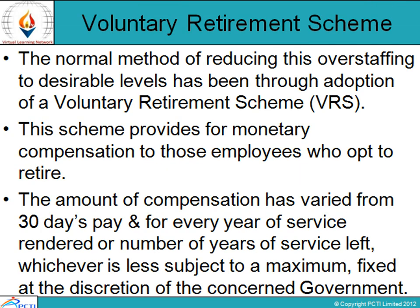When we talk about Voluntary Retirement Scheme (VRS): most public enterprises have always been overmanned. A World Bank study of five countries — Chile, Egypt, Ghana, India, and Turkey — concluded that overstaffing has varied between 20 to 90%. The normal method of reducing this overstaffing to a desirable level has been through adoption of VRS. This scheme is a monetary compensation provided to those employees who opt for VRS and retire.